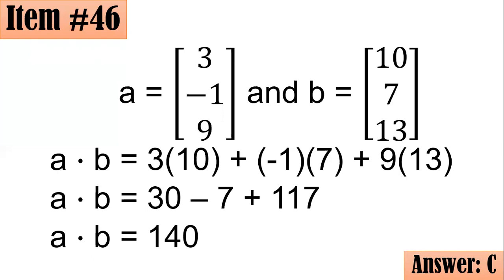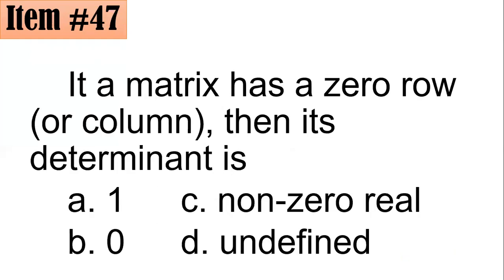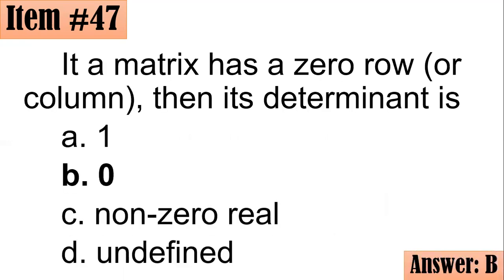Item 47. If a matrix has a 0 row or column then what is the value of its determinant? We have to take note that once you have a row or a column consisting entirely of zeros then the determinant is always zero, letter B. It's in fact a theorem in your linear algebra.